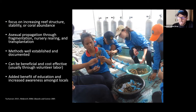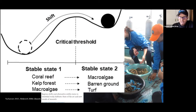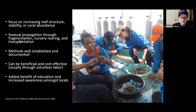This is basically assuming that the ecosystem is a stable state — that what was there 20 years ago is what's going to be there 20 years ahead. So we do fragmentation, nursery rearing, and then transplantation — asexual propagation.